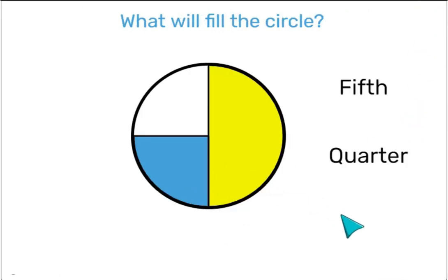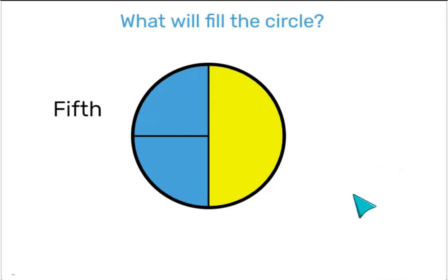Keeping our half and our quarter, what would it take to fill this empty space? Let's try the fifth. The fifth is too small, so let's try the quarter. Perfect. Here we can see that 2 quarters fill half of the circle.